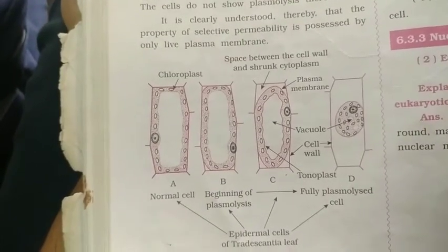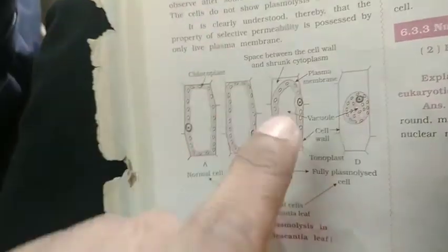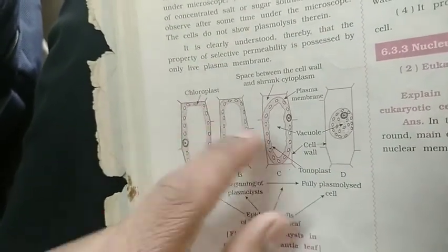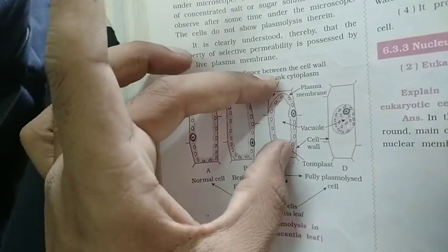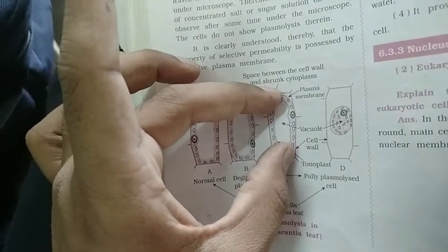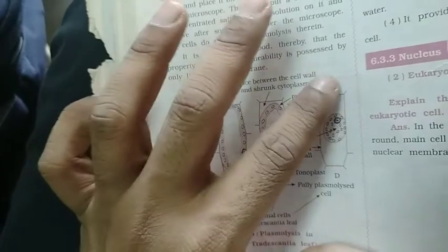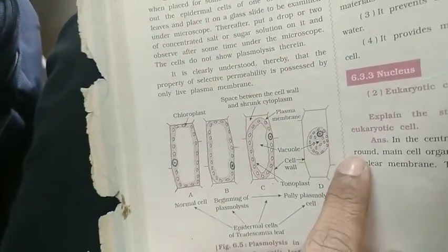A figure is shown below. One is a normal cell with chloroplasts visible. Then the beginning of plasmolysis is shown — at this stage the cell starts to shrink. Then fully developed plasmolysis is shown, where the cell contents progressively pull away from the cell wall.